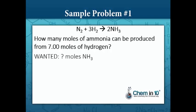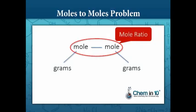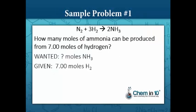I always set these problems up by identifying what we want to find out — which is the number of moles of ammonia — and what we're given, which is seven moles of hydrogen. Notice it's in three significant figures, so our answer is going to be in three significant figures. We need to go from moles of hydrogen to moles of ammonia, so this is a moles-to-moles problem.